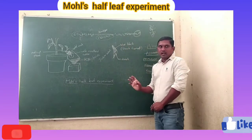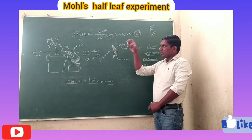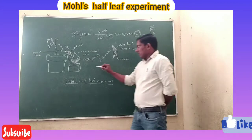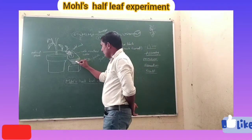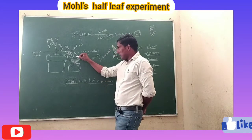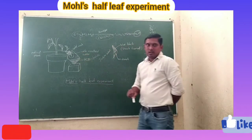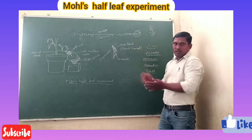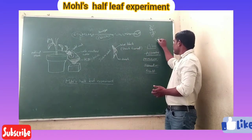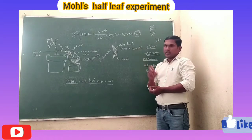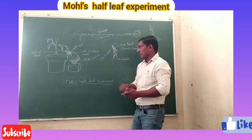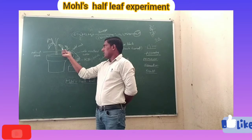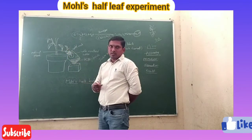After arranging the apparatus, we keep the experiment in sunlight for 2 to 3 hours. This is the main point. When we expose it to sunlight, the plant starts to carry out the photosynthesis process. The leaves contain chlorophyll, so they can carry out photosynthesis. The reason we add potassium hydroxide solution inside the bottle is that it absorbs the carbon dioxide inside, so there is no carbon dioxide available inside the bottle.